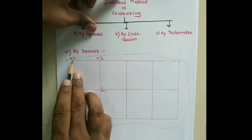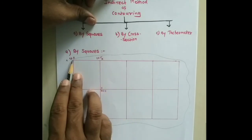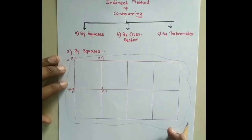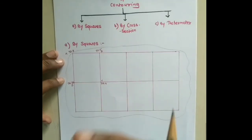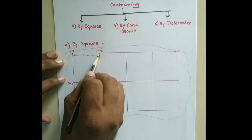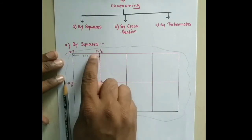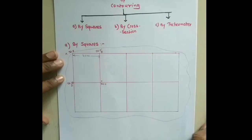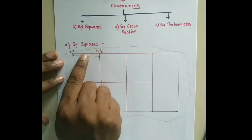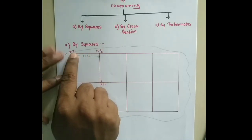If point A has a reduced level of 58.8 meters and point B has 56.5 meters, and the distance between them is 30 meters, we need to plot the contours. Considering a contour interval of 1 meter, after 56 the contour 57 comes, then 58, because from 56.5 to 58.8, two contour points will be found: 57 and 58.